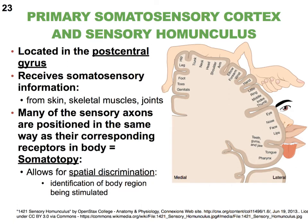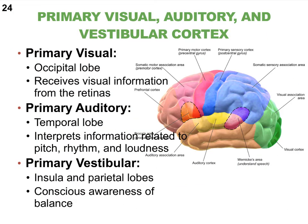Which primary area did we just focus on? The primary somatosensory area. We're still focusing on sensory input. Now let's list the other major sensory areas. If you know your special senses, this will be pretty simple. What are your five special senses — excluding touch, which is not a special sense?